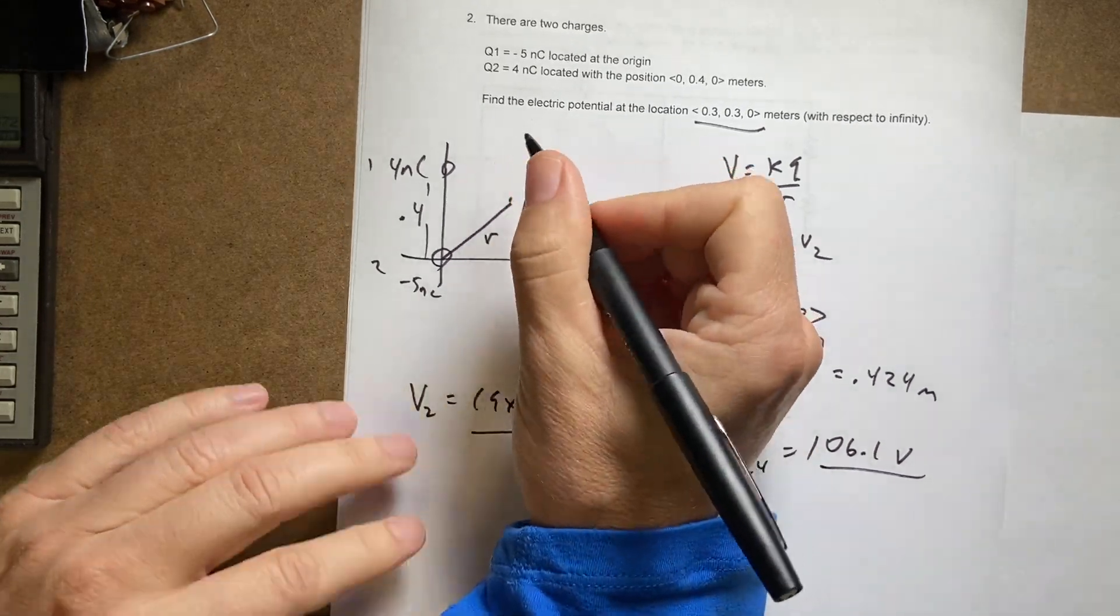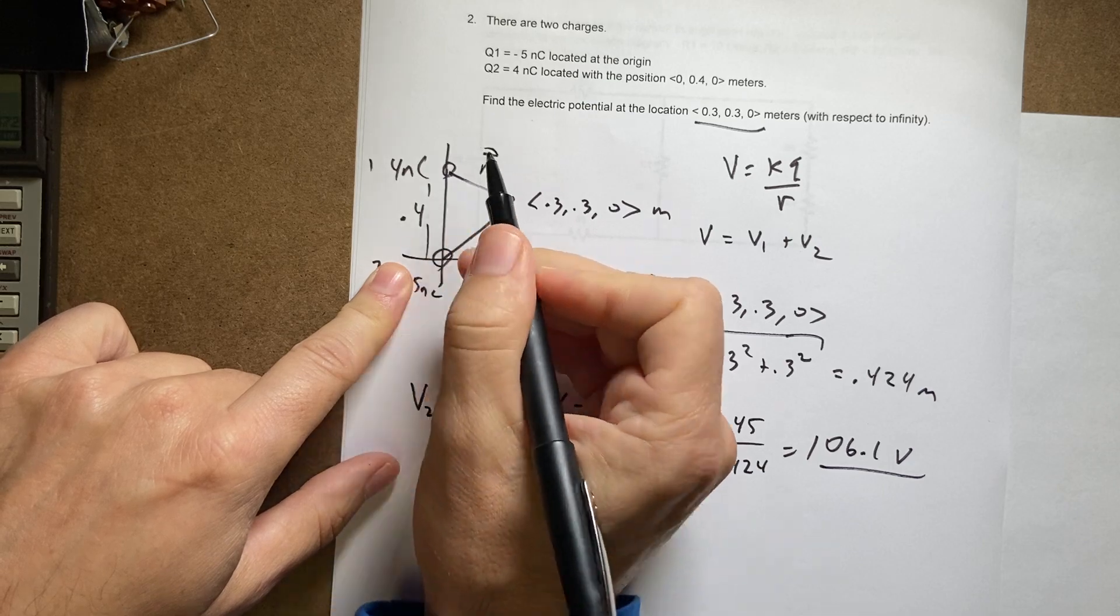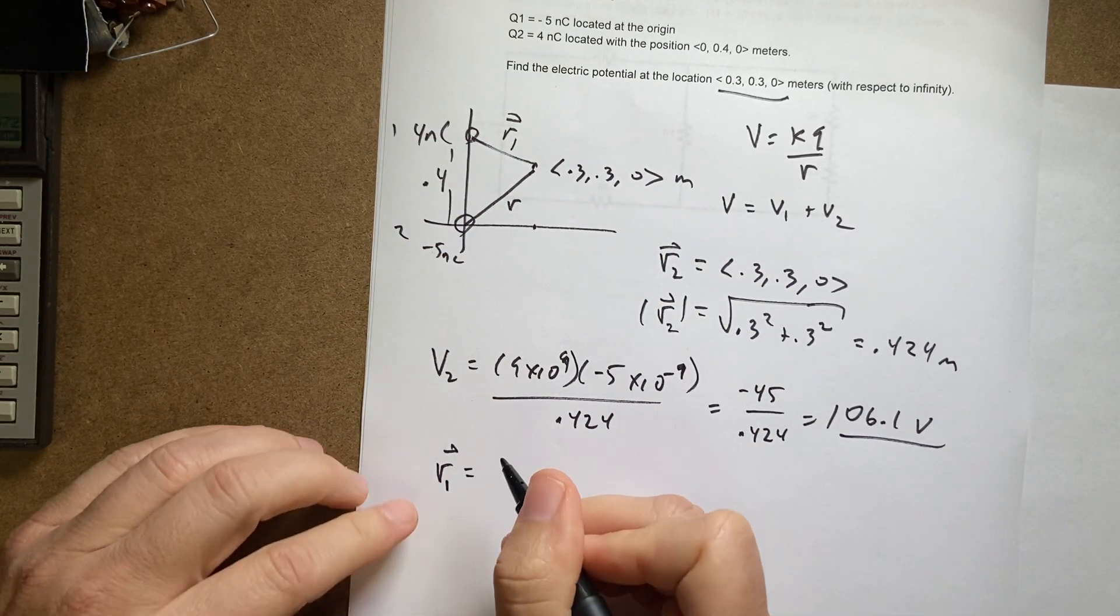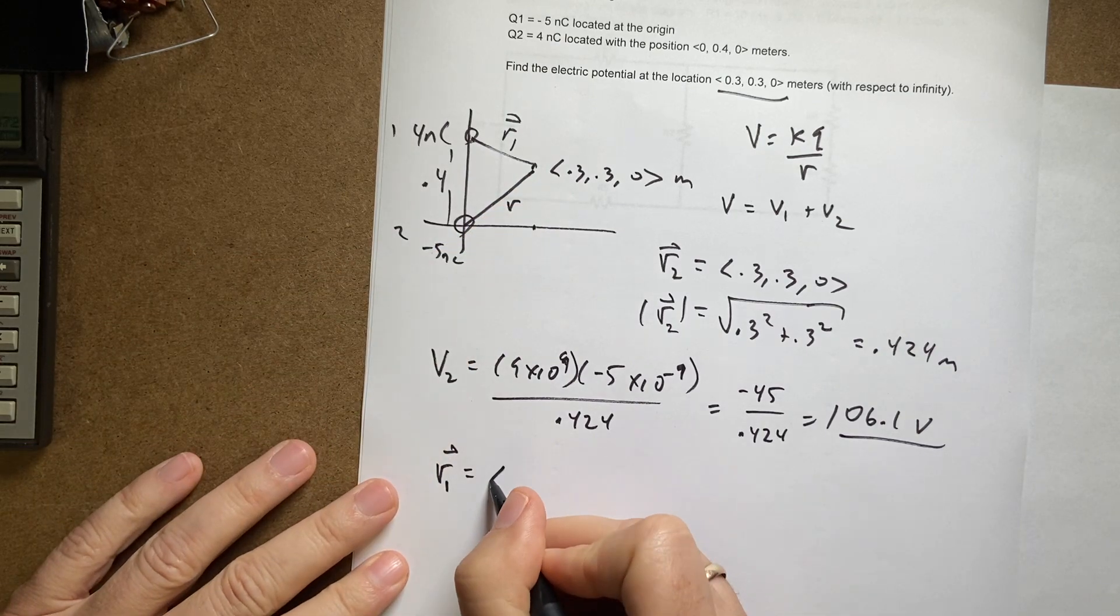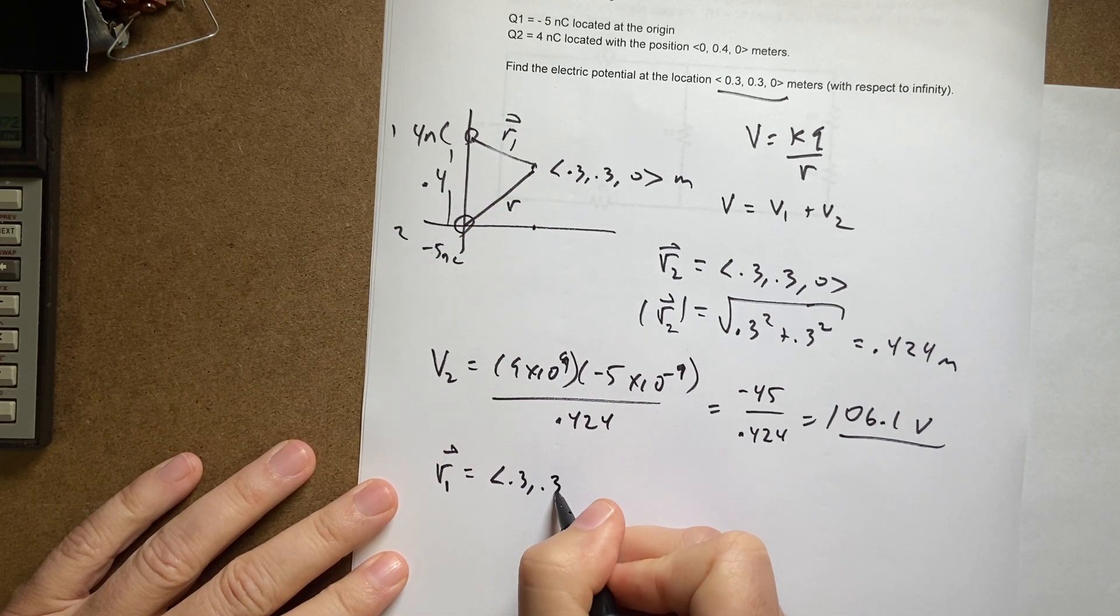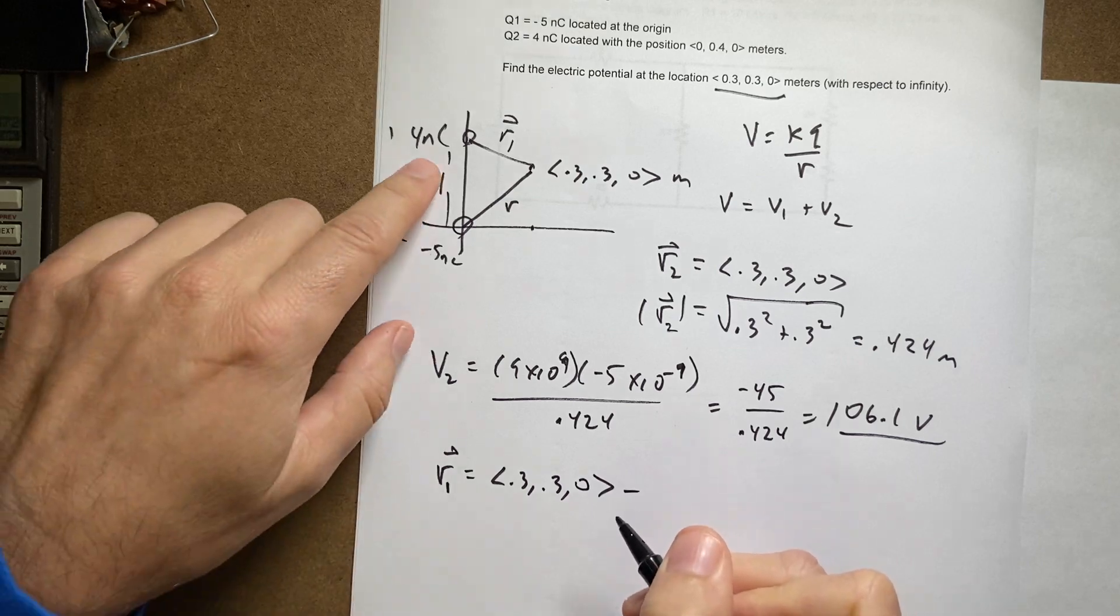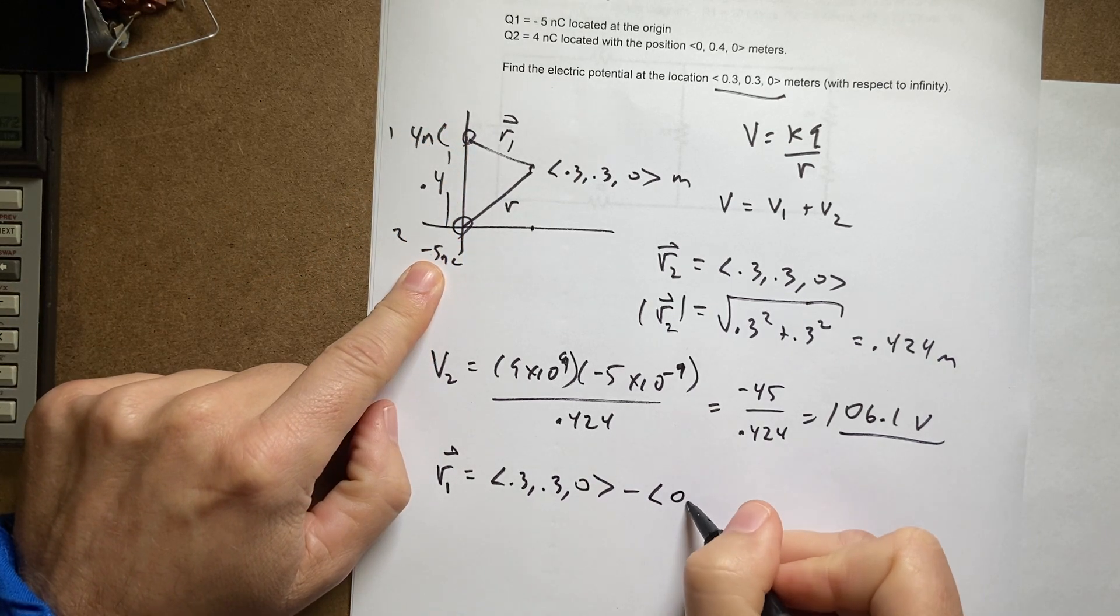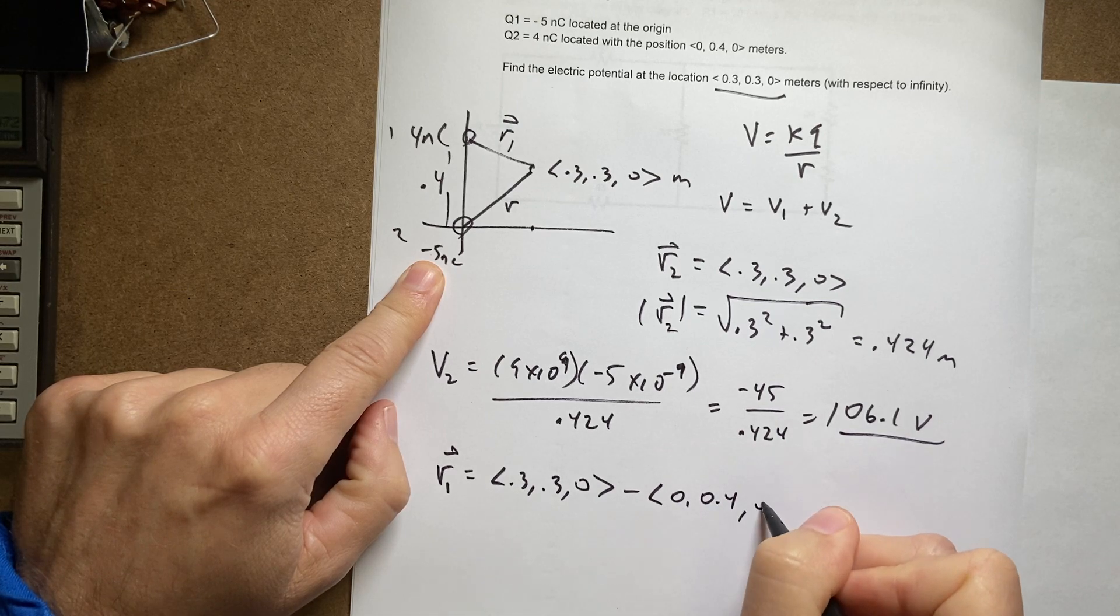Now for V1 I need to find this distance, this vector R1. So R1 is going to be the final position of (0.3, 0.3, 0) minus the initial position. Where does this one start? Well that's going to be equal to the vector (0, 0.4, 0). So when I subtract those I get 0.3 minus 0 which is 0.3.